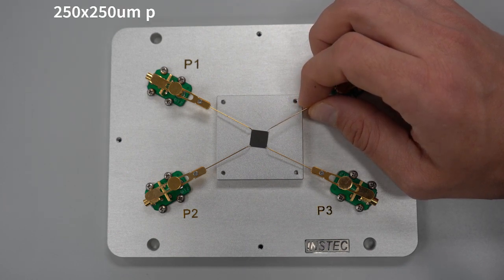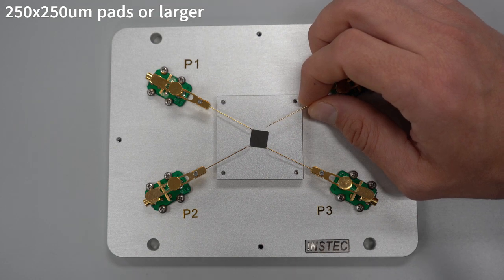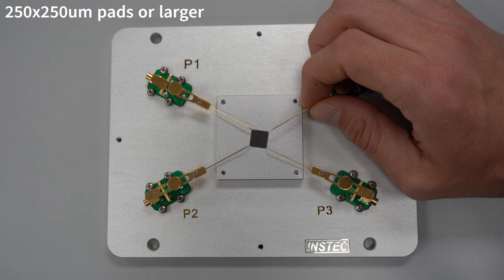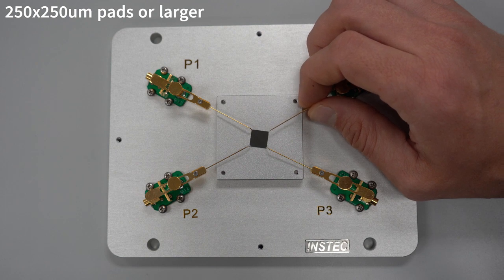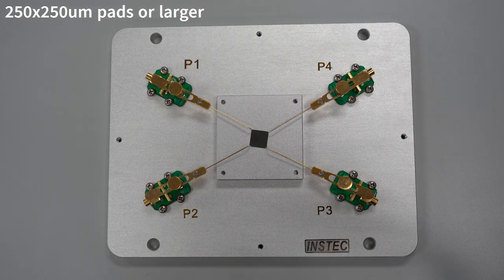The spring-loaded nature of the prober means that we generally use a larger probe tip diameter to reduce pressure on samples. Combined with the manual movement of this sample, it is recommended that you use 250 by 250 micron or larger electrical pad sizes.